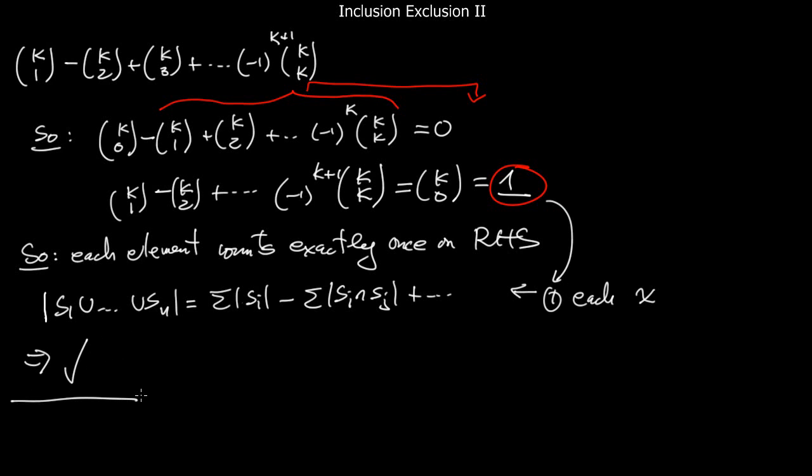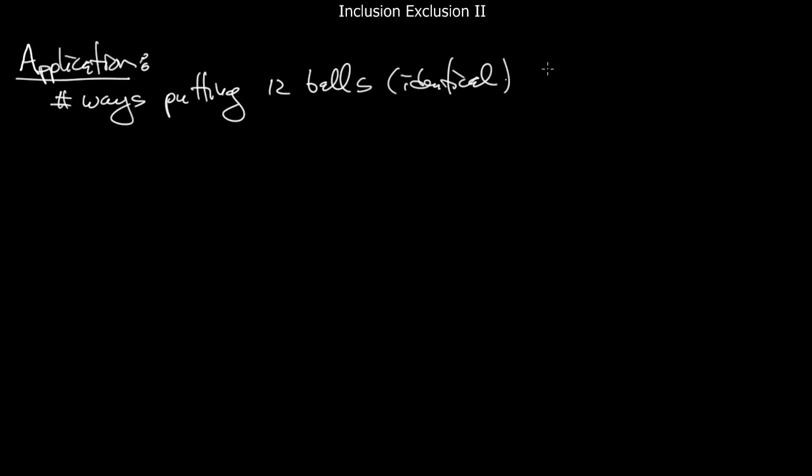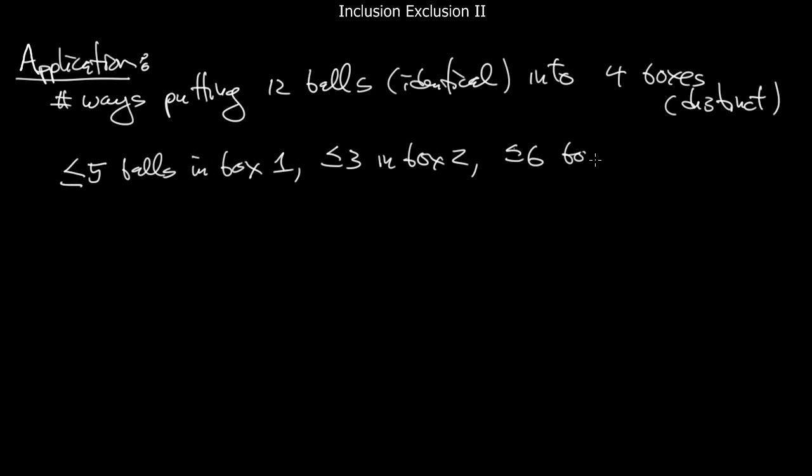We've already seen an application of this to the derangement numbers. I now want to look at a different application, which is counting with constraints. Suppose I asked you the following. What's the number of ways of putting 12 identical balls into 4 distinct boxes with some constraints, where you're only allowed to put at most 5 into box 1, and at most 3 into box 2, at most 6 into box 3, and at most 2 into box 4.